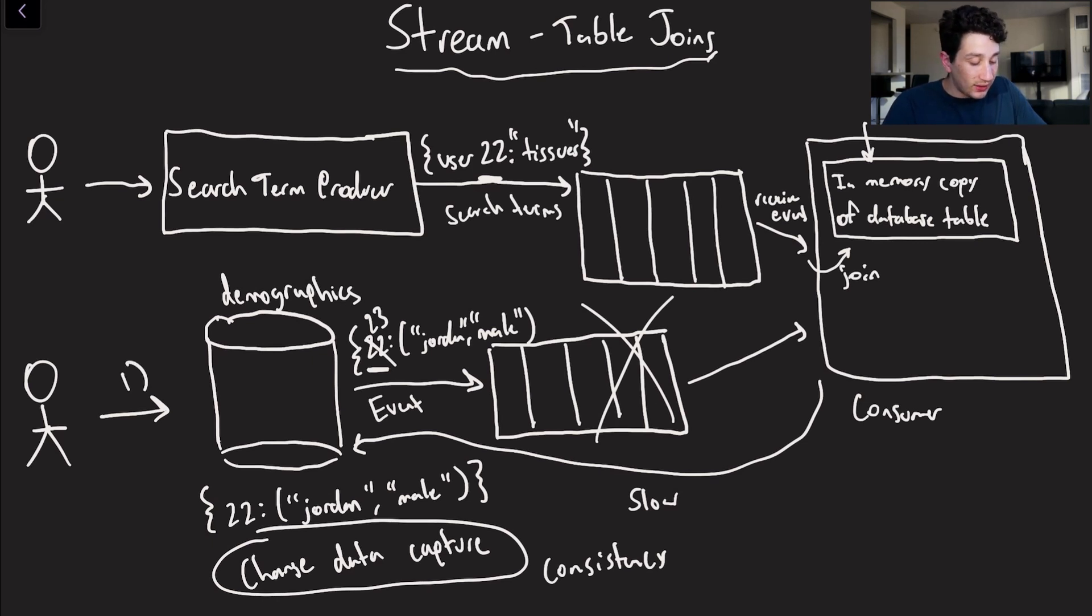The way we do this, again, is change data capture. So a write goes to our database, that's step one. The database propagates that event, step two, to a message broker. And then from there, what's actually going to happen is the message broker can then be consumed by the consumer, who can now actually go ahead and update the in-memory copy of the database table. So that when an event is received from our stream, we can actually perform our join and then send it to some outbound queue. And this is going to greatly lower our latency. So using something like change data capture, turning a source of data like a database into effectively another stream, allows us to make sure that we're getting the minimum possible latency and the maximum possible throughput in processing all of these stream events.